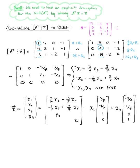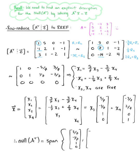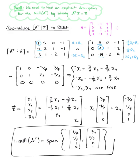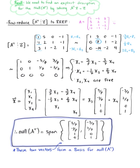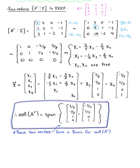Therefore, the null space of A transpose is equal to the span of the two vectors (5/7, -1/7, 1, 0) and (-3/7, 2/7, 0, 1). These two vectors in this spanning set form a basis for the null space of A transpose.